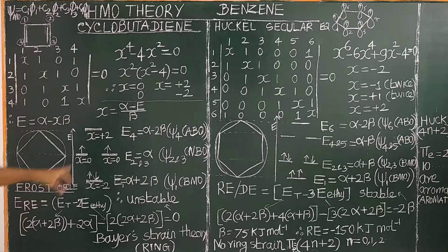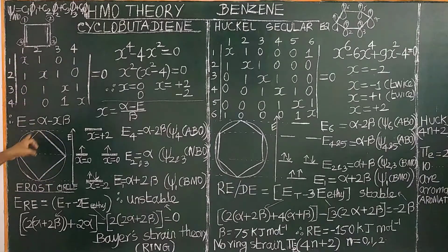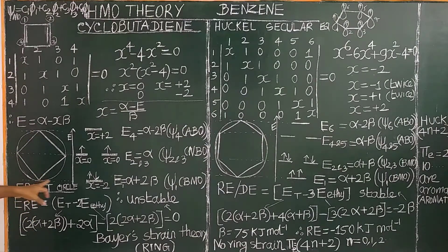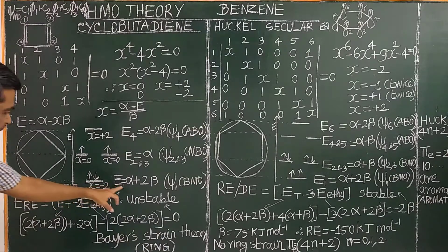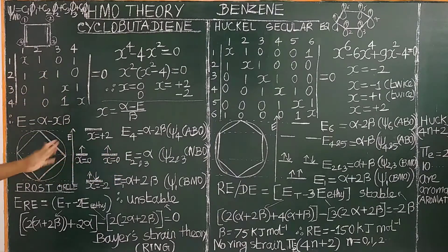The energy levels can also be easily obtained by using the Frost circle — a mathematical coincidence. Let us draw a circle. Within the circle, we inscribe a square with one vertex pointing downward. The lowest vertex gives E1, and the two side vertices give the degenerate levels E2 and E3, and the top vertex gives E4. These energy levels are simply obtained from the Frost circle.